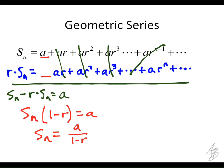Now, this formula works whenever the absolute value of r is less than one. What happens to these terms when the absolute value of r is less than one? They get smaller, right? That's really important that these terms get smaller.